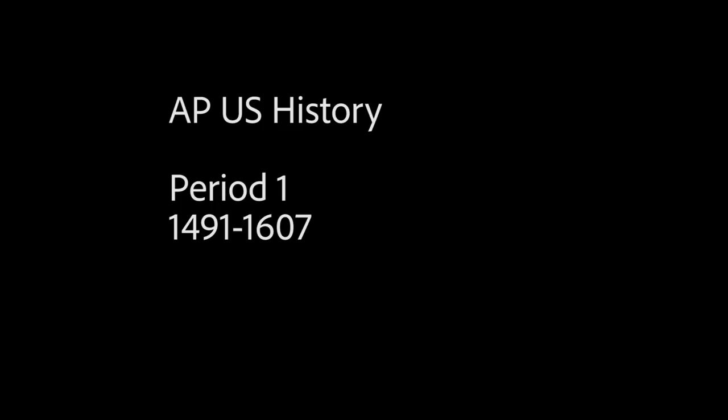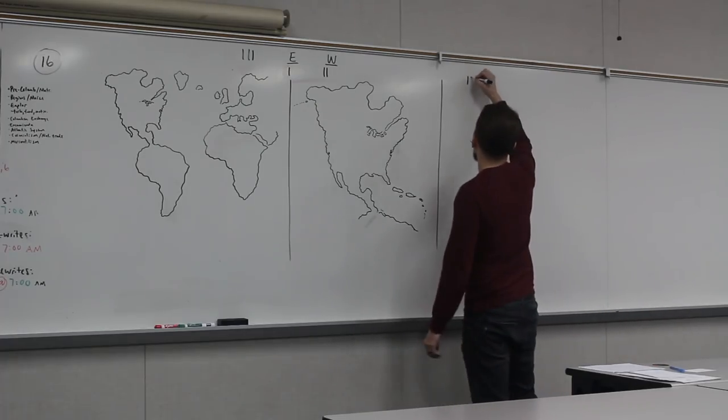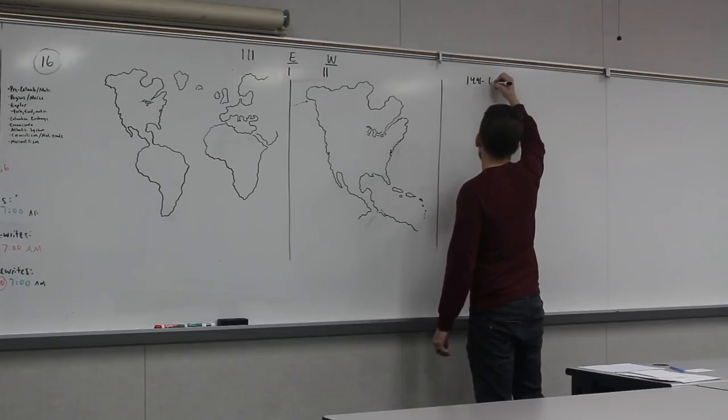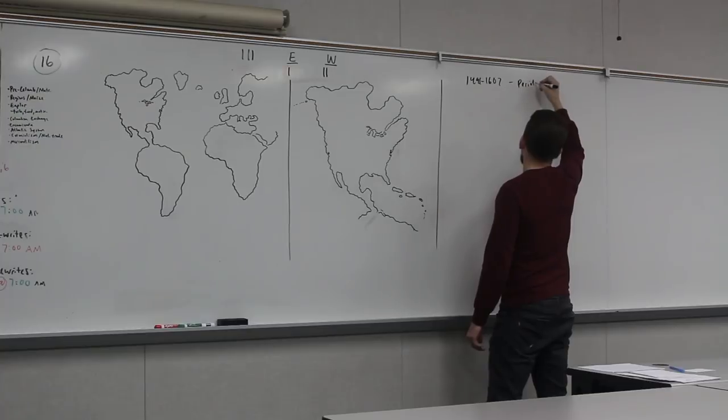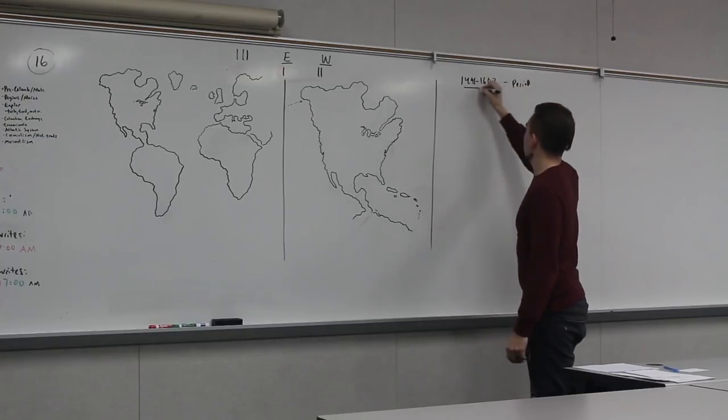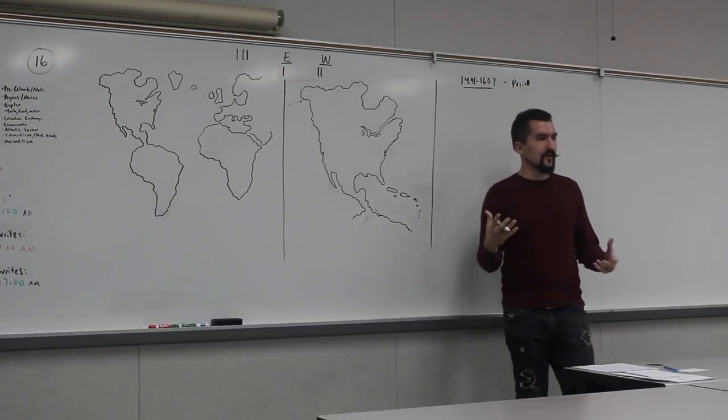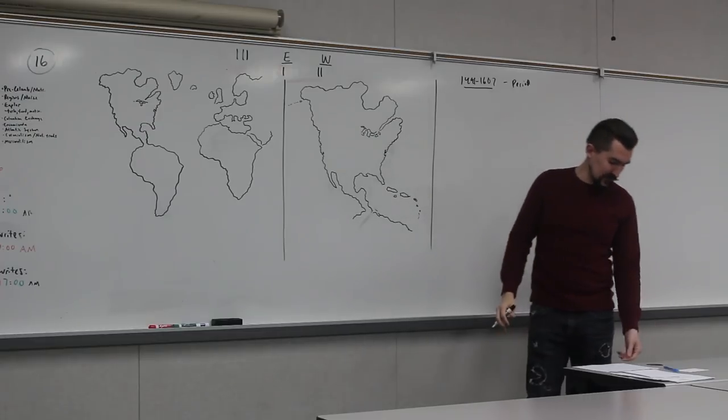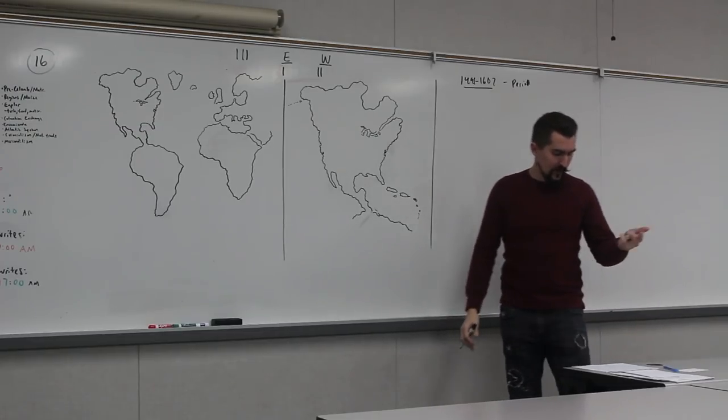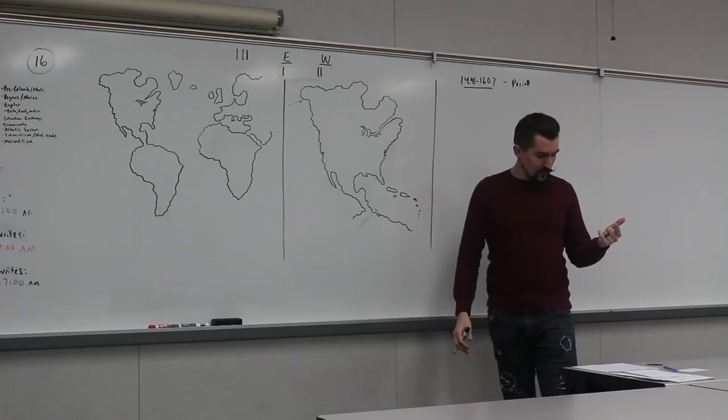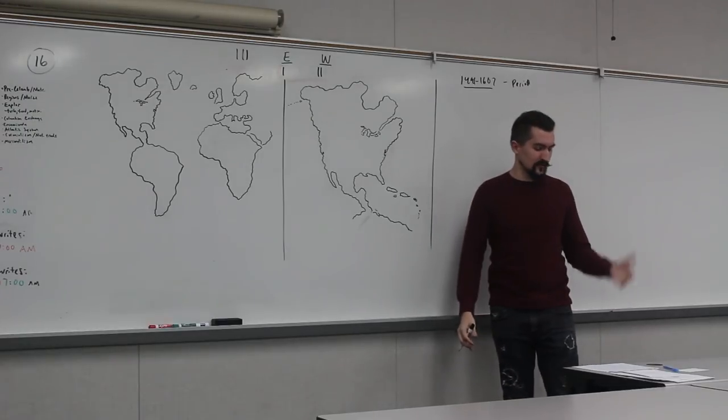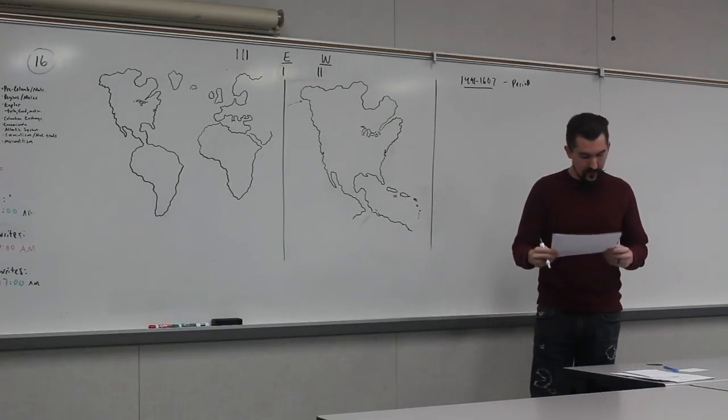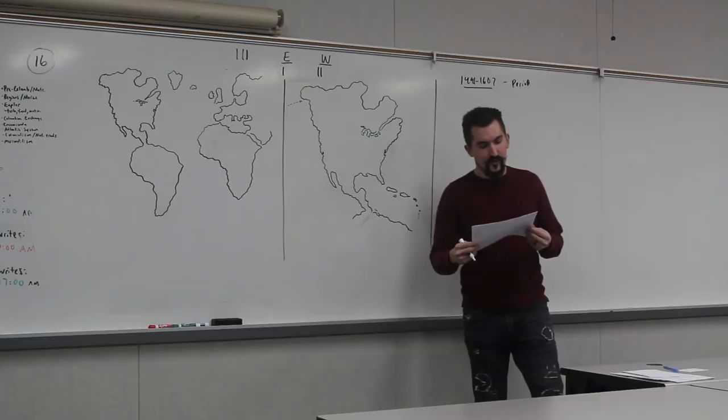Okay, so we'll do AP US history. We're going to start with period one, which is the years 1491 to 1607. It's only like 5% of the test, but a lot of the stuff in this period you have to know going forward. It sets up things like what Native American tribes are, which ones there are, systems like exploration, mercantilism, colonialism, things like that. So we'll talk about those, and then we'll go on to period two.